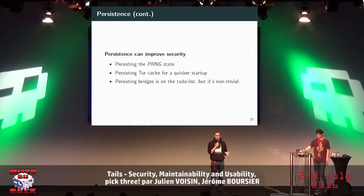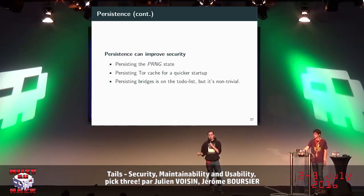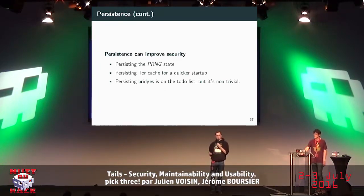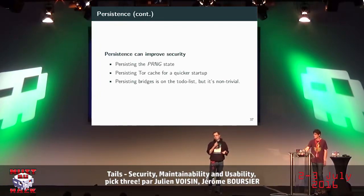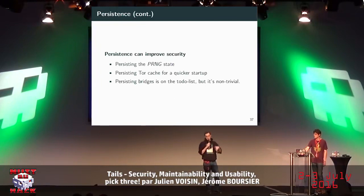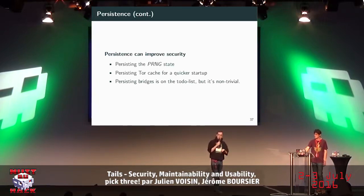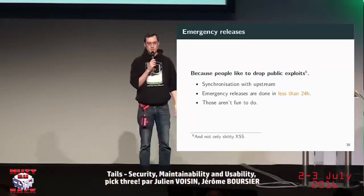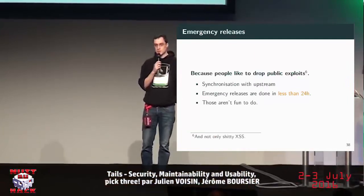Persisting bridges is a cool but non-trivial topic. Bridges are the first hop into the Tor network, and if you connect to a malicious first hop you're compromised. By default, if you use the Tor Browser bundle you always use the same bridge, but do we want that in Tails? It could fingerprint a user — for example, if you go to another country but still use the same bridge, someone monitoring the network could correlate your identity. If you have ideas about this, please come see us after. We also do emergency releases when exploits are dropped.